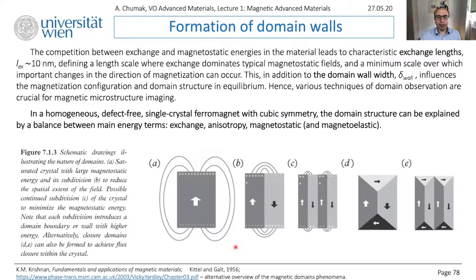Of course, a physical system tries to minimize the energy. Therefore, what happens is it splits into domains, and then the magnetic field created by one domain is partially compensated by the field of another, and we will have such domain orientations. The usual way such domain structures can take place — from the point of view of dipolar energy — is you want to split the structure into as many domains as possible.